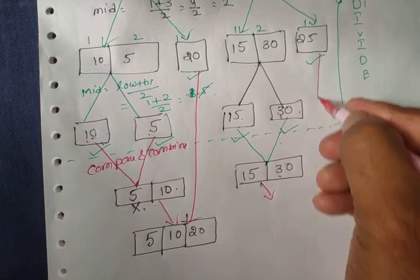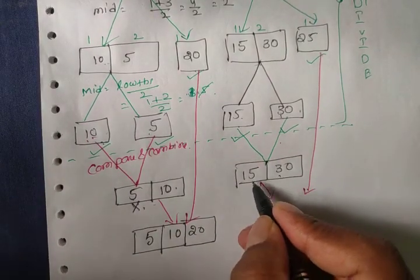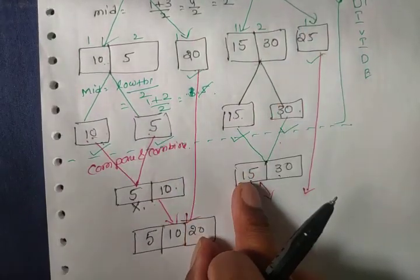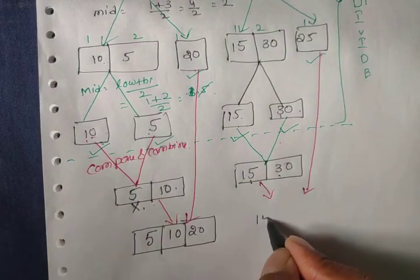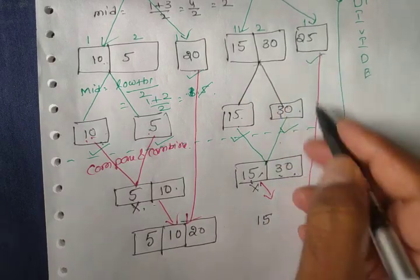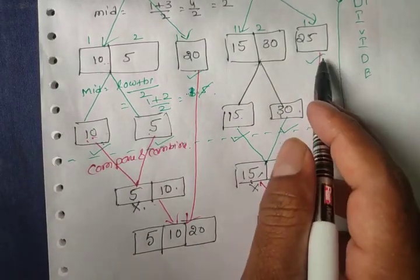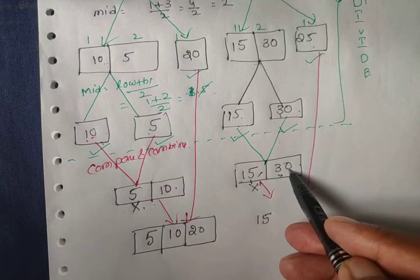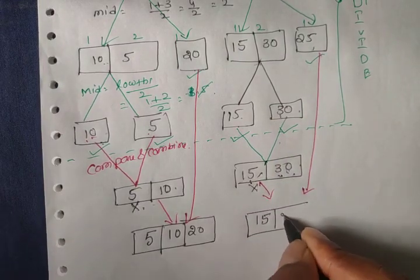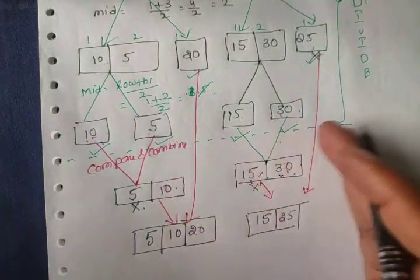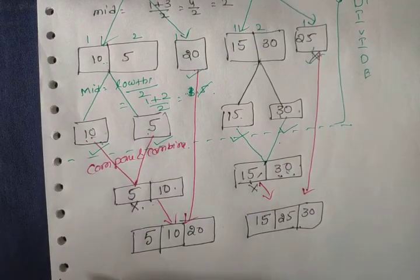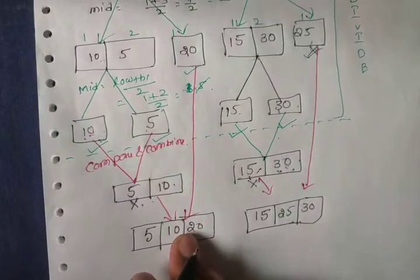Similarly, we combine [15, 30] with [25]. Comparing: 15 is less than 25, so 15 goes first. Then 30 is compared with 25 — 25 is less than 30, so we take 25 from the second partition. Then the remaining element 30 is automatically added, giving [15, 25, 30].